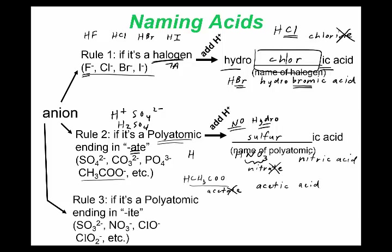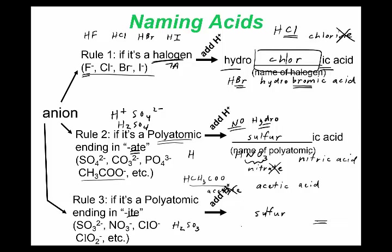If the polyatomic anion ends in '-ite,' you use the suffix '-ous' instead of '-ic.' So H2SO3 — the anion is sulfite — becomes sulfurous acid. HNO2 — the anion is nitrite — becomes nitrous acid.